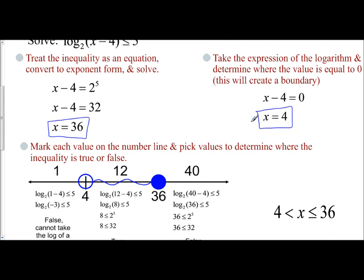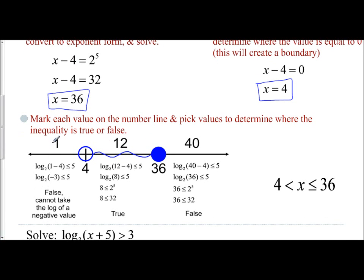I know that my logarithm cannot exist where it equals 0, so there's an open circle. It can't exist at 36. I just need to determine where do I shade. Where do I put my solution? And the way you do that is just pick numbers. I picked 1, because it's to the left of 4. 12 is between 4 and 36. And 40 is above 36. And I just plug them in.